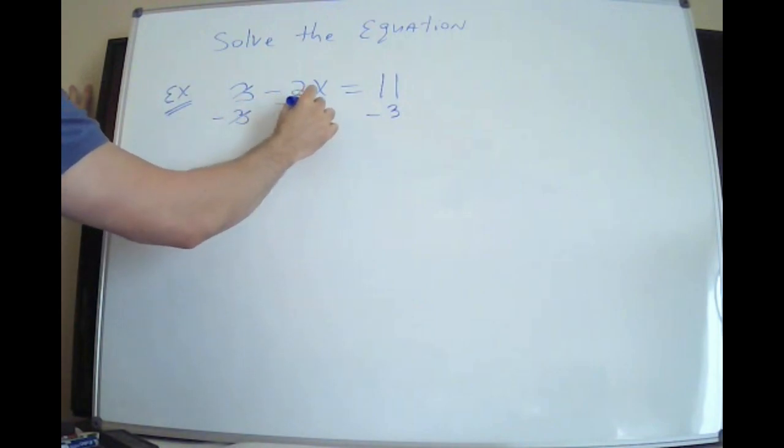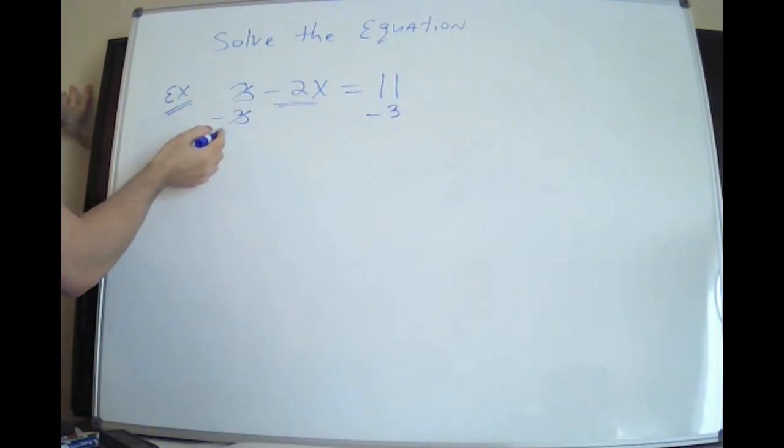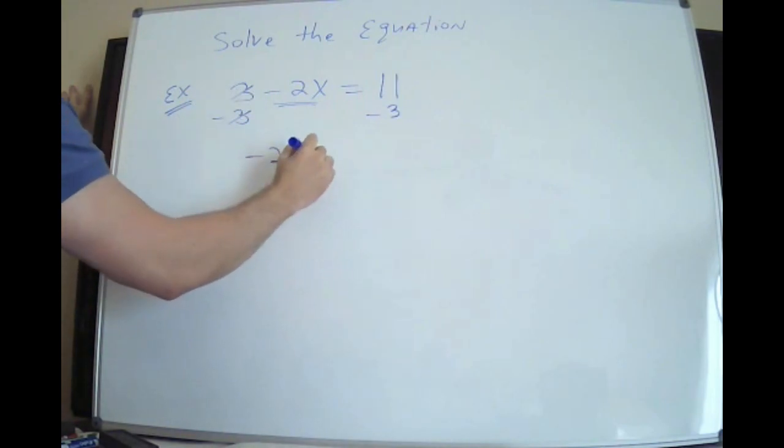Now, you have to be super careful here. This 3 is gone now because 3 minus 3 is 0. But this drops down. You have to make sure that negative stays in front of it. I see this sign disappear all the time. And on the other side, you just have 11 minus 3, which is 8.